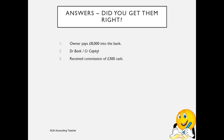Number two: we received commission of £300 in cash. The asset that is the cash account has increased by £300, so we need to debit cash with £300 and credit commission received. Remember, anything received — past tense with 'ed' on the end — is income, so we need to credit that income account.